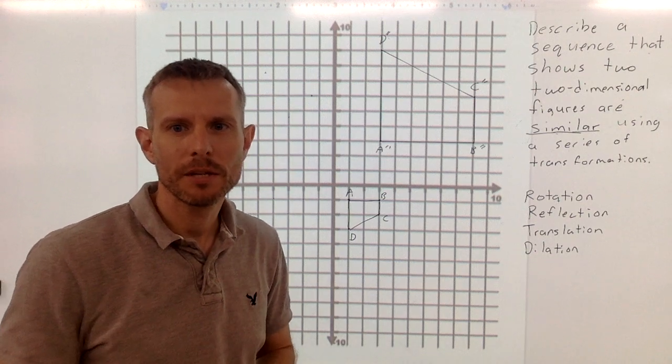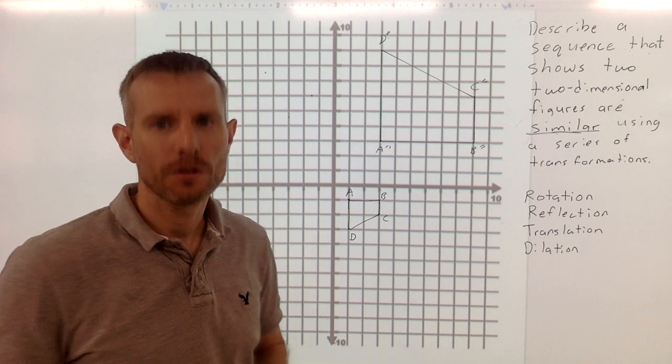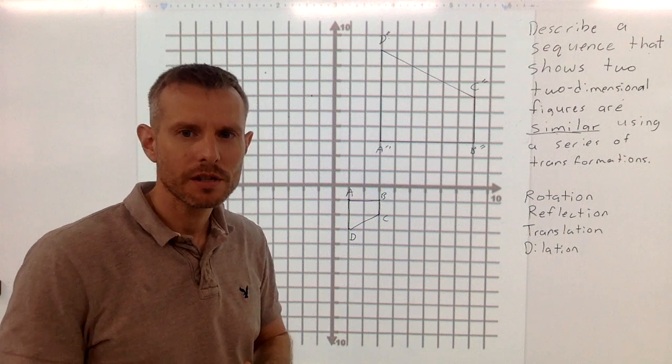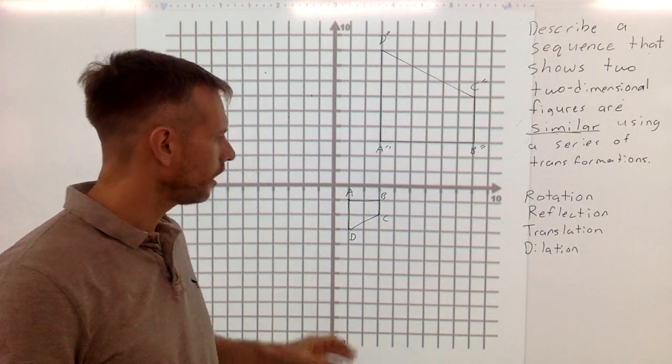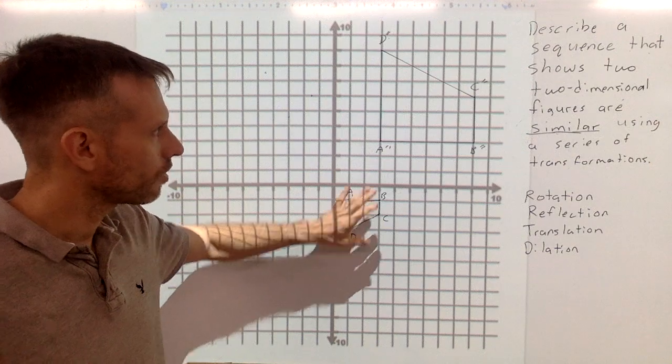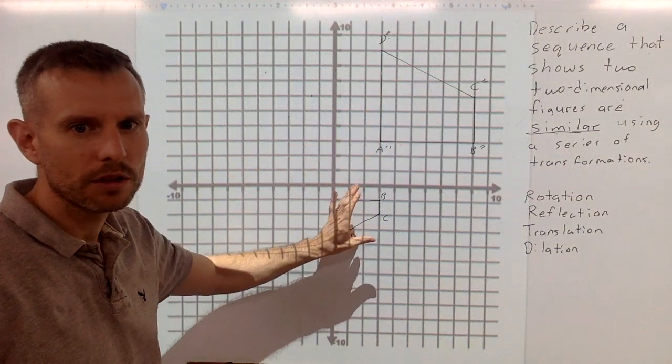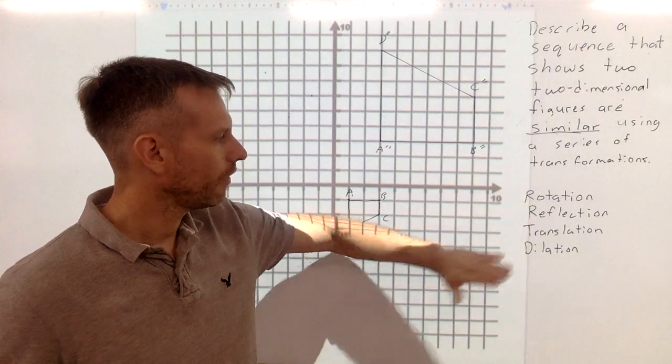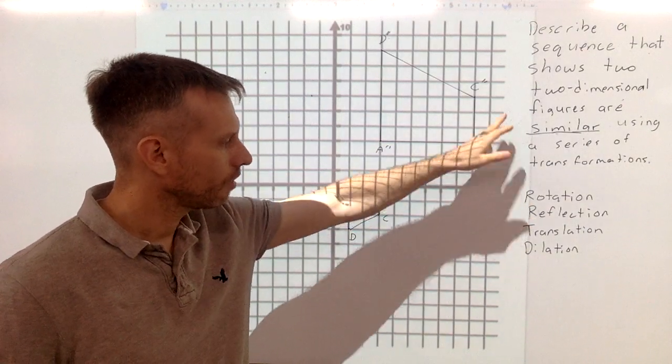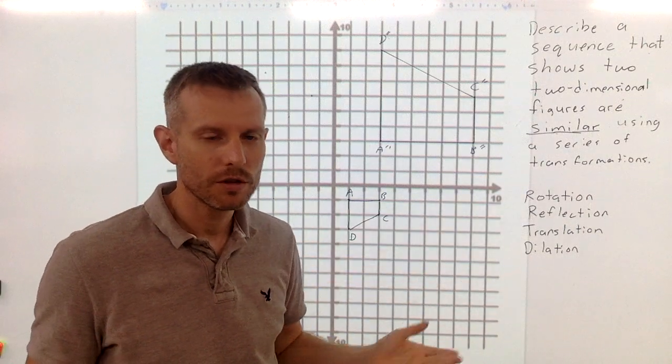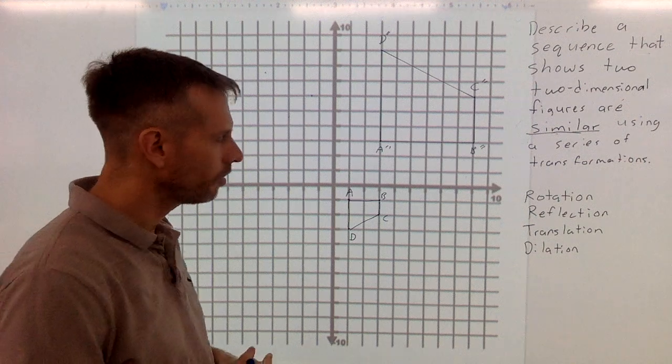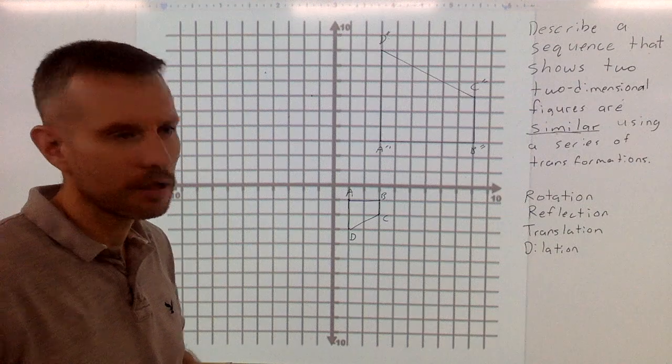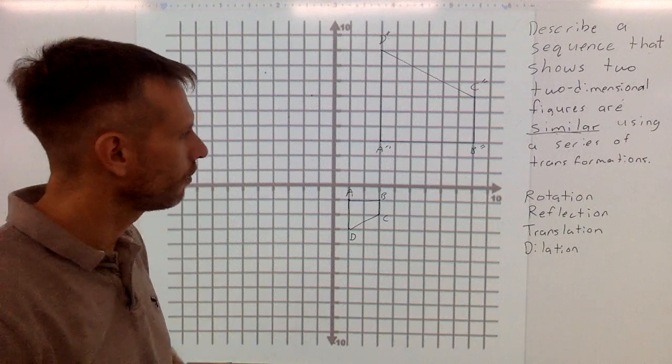In this video we are going to describe a sequence that shows that two two-dimensional figures are similar using a series of transformations. So how can we show that this figure is similar to this figure by either rotation, reflection, translation, or since they're similar, dilation, or using a combination of those. There's usually more than one way of doing this, but we're just going to go through one for a few examples here.